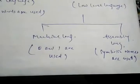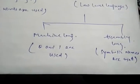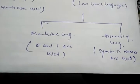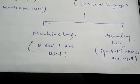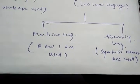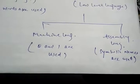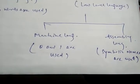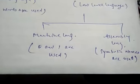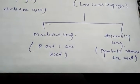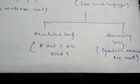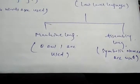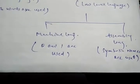The second low-level language is assembly language. In assembly language, some codes are used that are called mnemonic codes, also called symbolic names. But assembly language is not directly understood by the computer. So we require a translator called the assembler, which is used to convert an assembly-level language program into machine-level language.